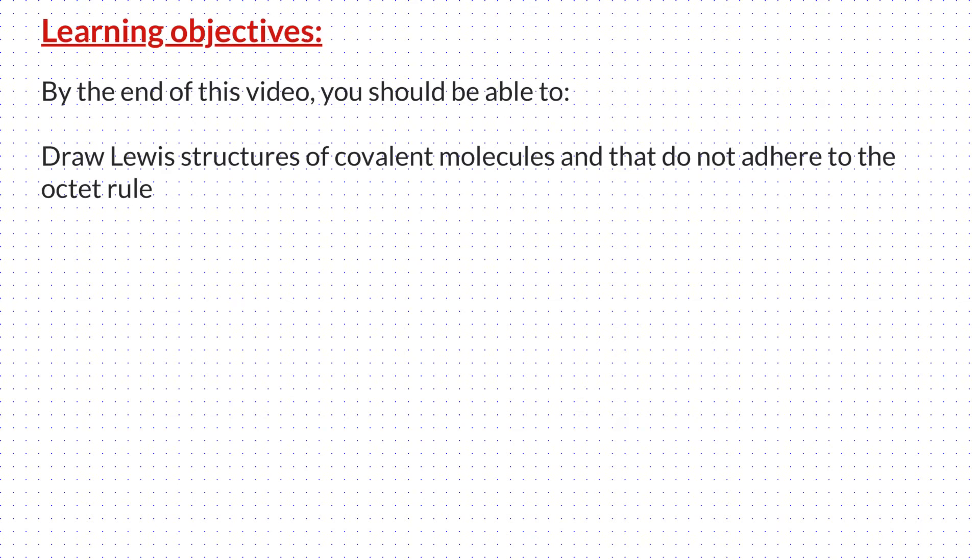Hello everyone. In this video we will learn to draw Lewis dot structures of covalent molecules that do not obey the octet rule. Even though the octet rule guided us to draw all the Lewis dot structures, it is not universal. There are several exceptions to the octet rule, and these exceptions are classified into three types.